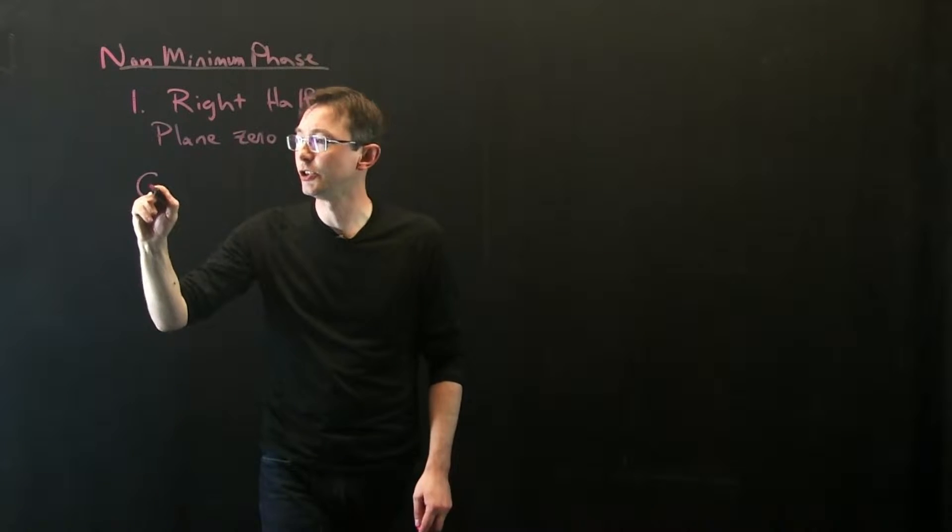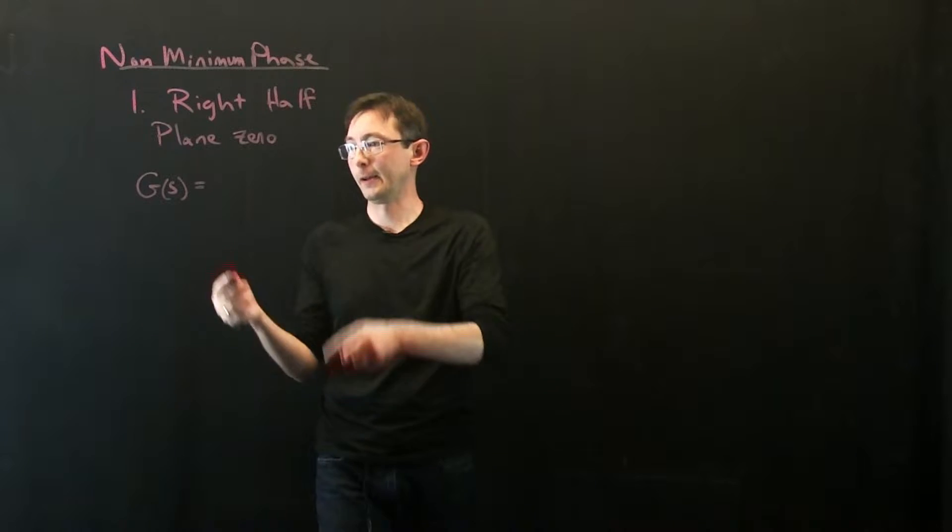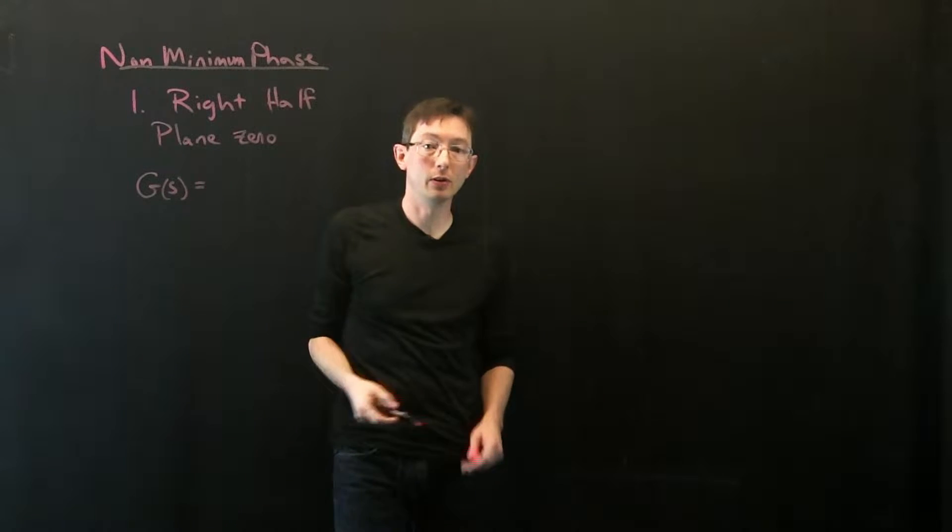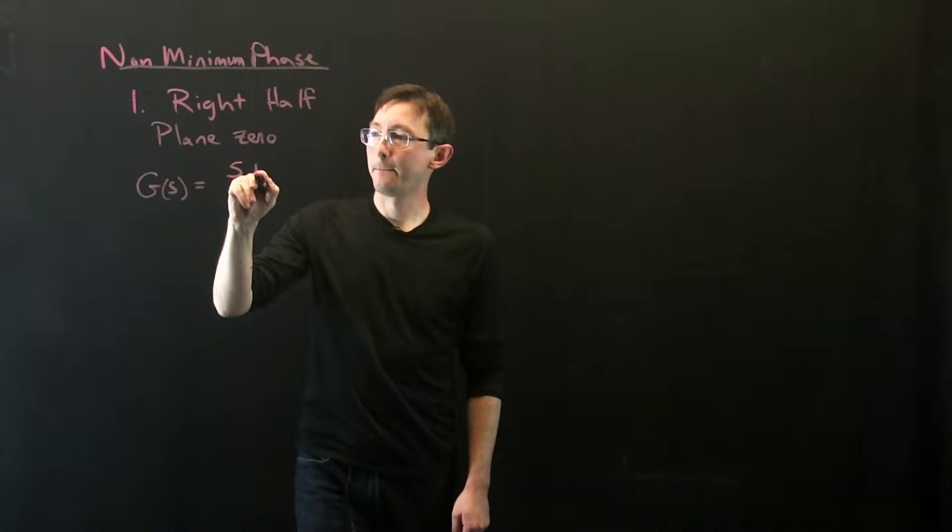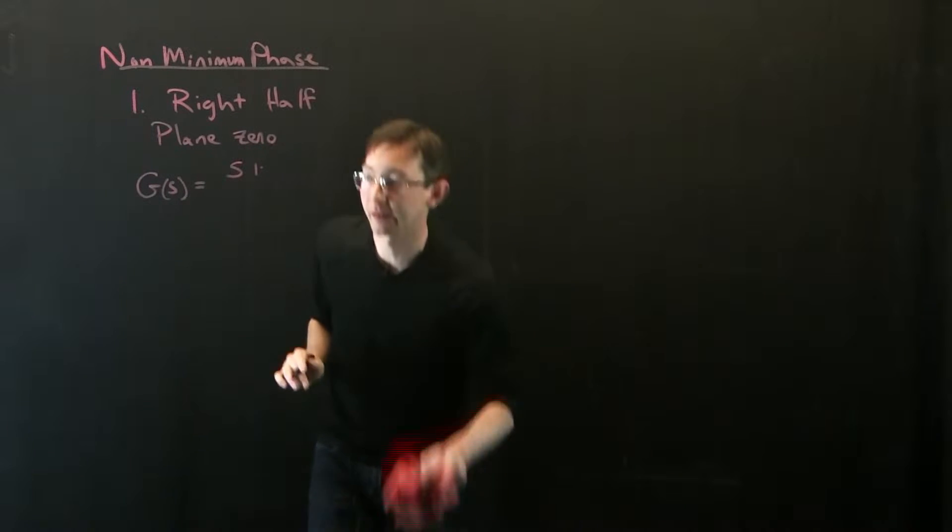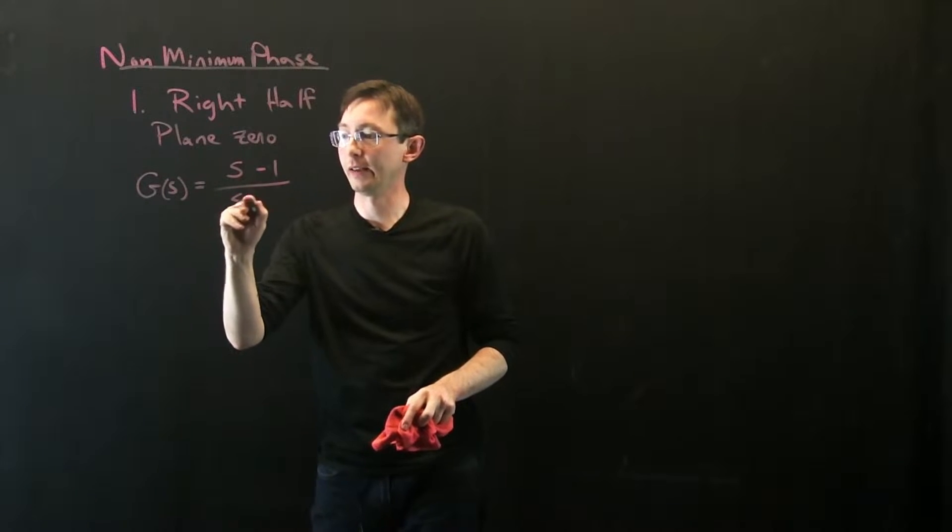So if my transfer function g of s, remember this was the Laplace transform of y of s divided by u of s. If this was something like s minus 1, let's get it right, s minus 1 over s plus 10.